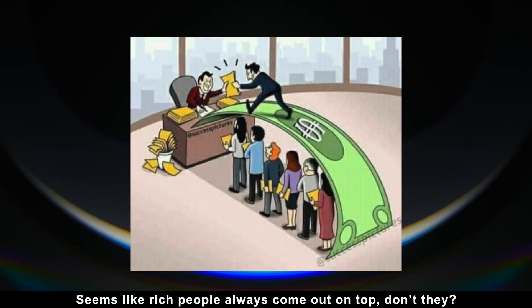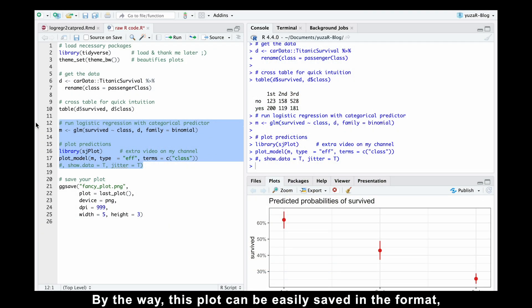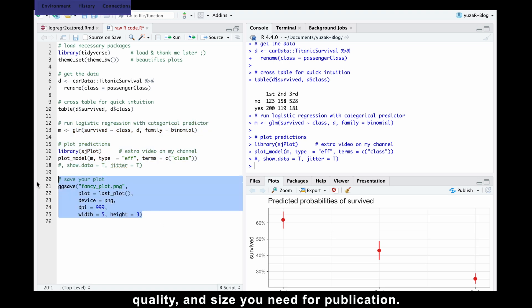Seems like rich people always come out on top, don't they? By the way, this plot can be easily saved in the format, quality, and size you need for publication.